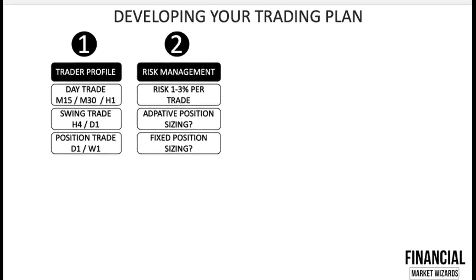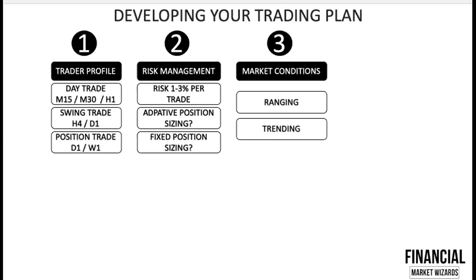Step three is about defining market conditions. Your trading plan must define what kind of market conditions you are trading — are you trading a ranging market or a trending market? If you are trading a ranging market, you ideally want to sell high and buy low. You need to define in your trading plan whether you are allowed to sell the top and buy the bottom, or, if the market is in an uptrend but ranging, whether you are only allowed to buy the bottom.